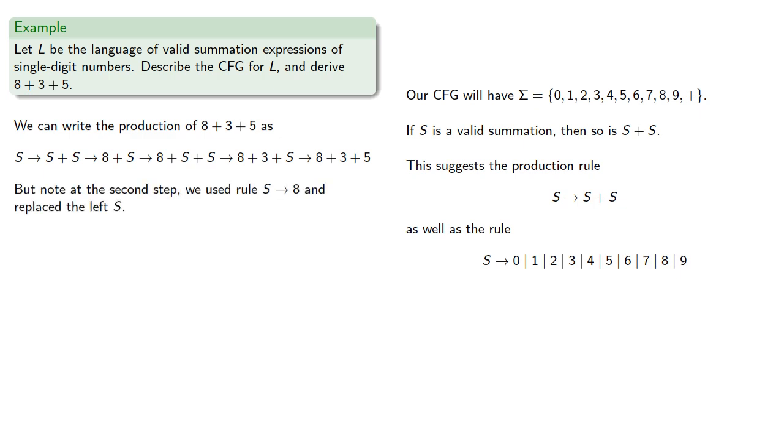But note that at the second step, we used the rule S → 8 and replaced the left S. If we replace the right S instead, we'd have S → S + S. This right S produces 5. Then the left S produces S + S. Then the right S produces 3, and then 8.